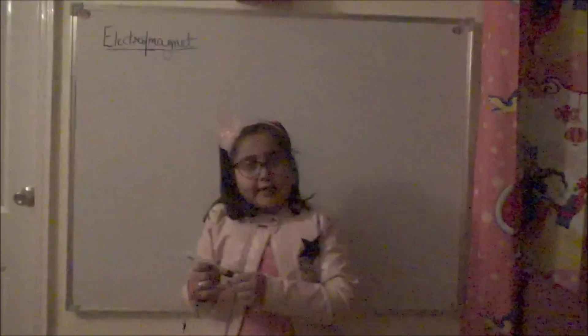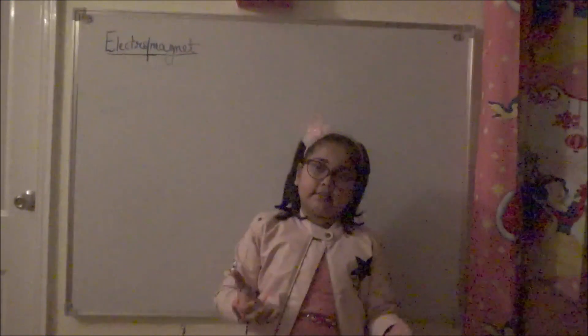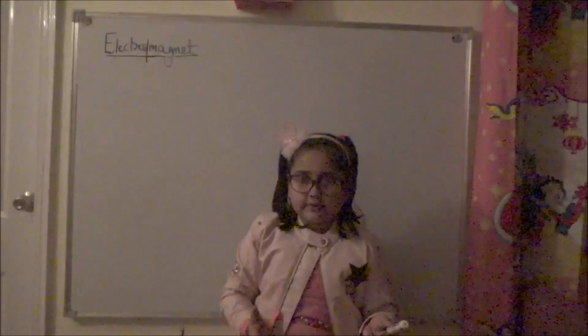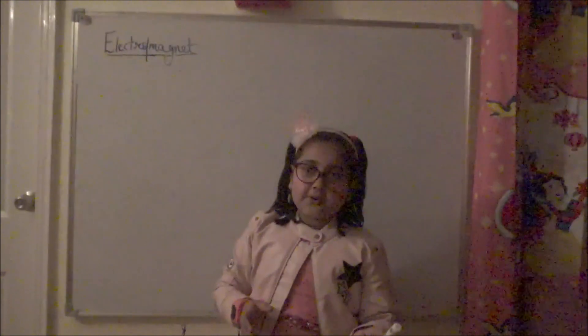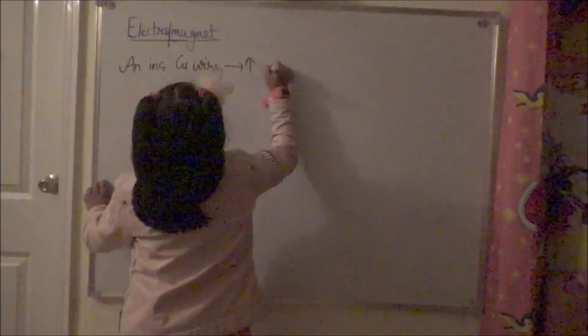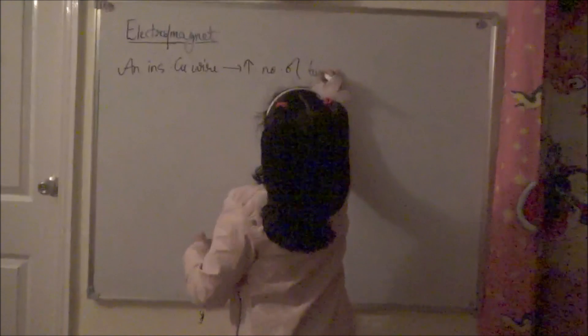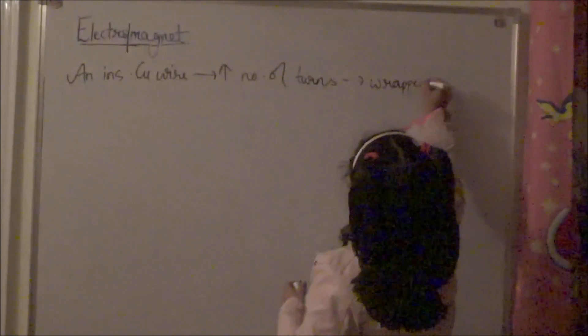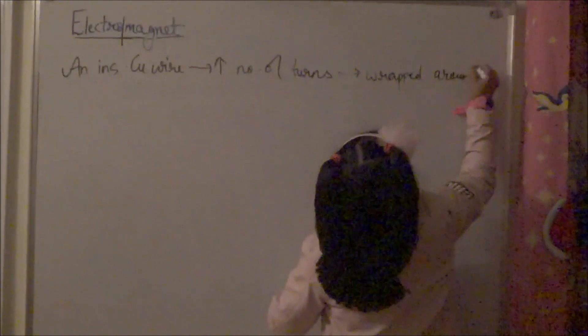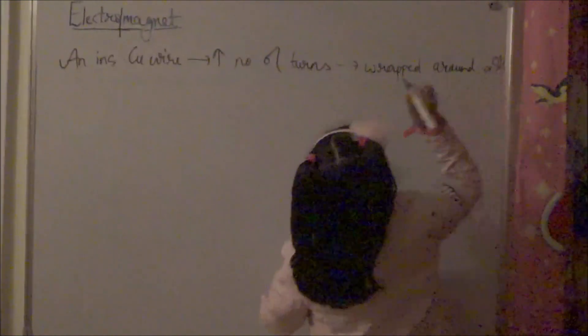We'll split the word into Electro and Magnet. Electro means something related to electricity. An electromagnet is a temporary magnet. If we ask what is an electromagnet, we write: an insulated copper wire with a large number of turns, wrapped around a soft iron core.